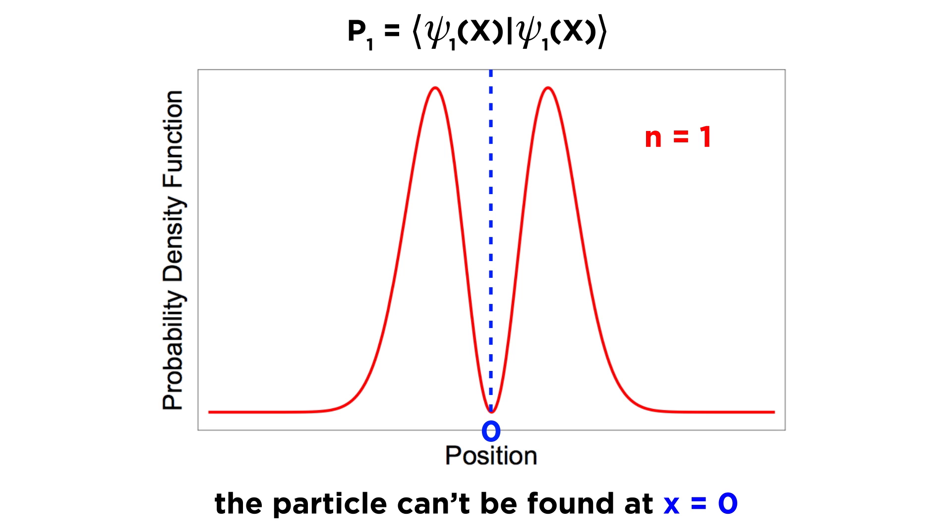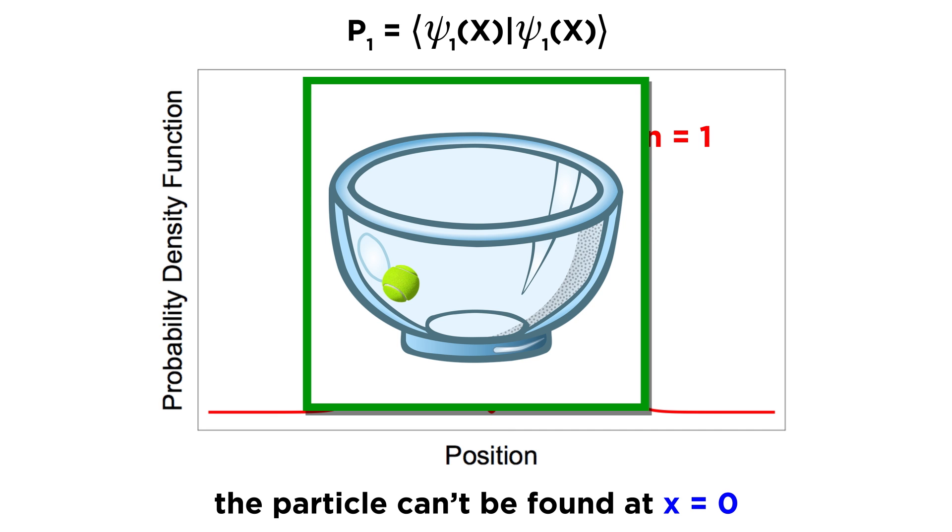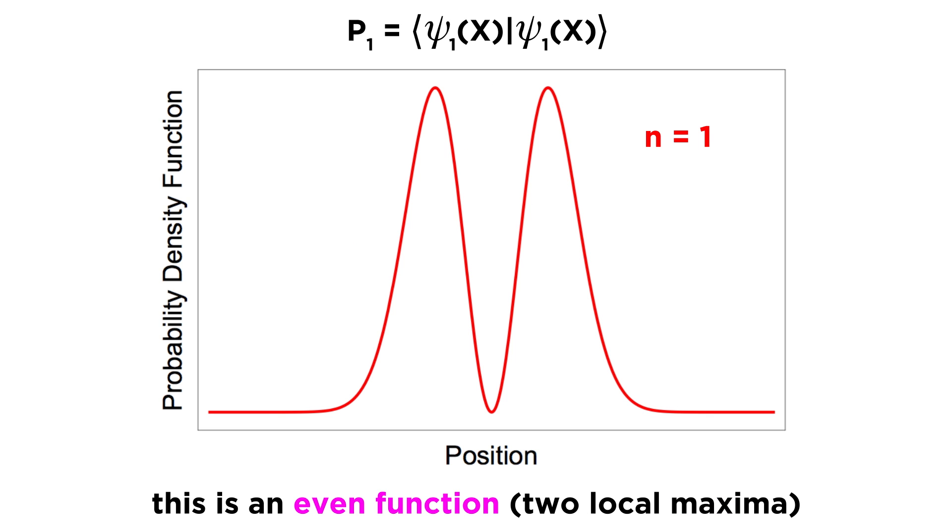This is a rather striking example of quantum behavior. Using a previous analogy regarding a tennis ball in a bowl, this would be like never finding the tennis ball at the precise bottom of the bowl, which is rather unintuitive. Also notice that this function has two bumps, so we can call this an even function.